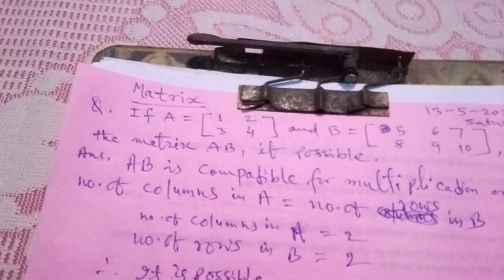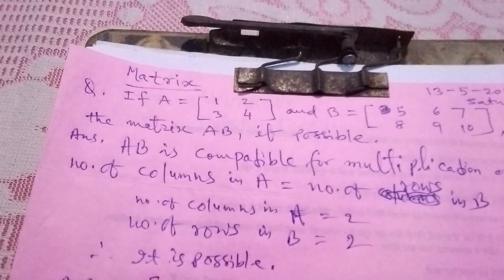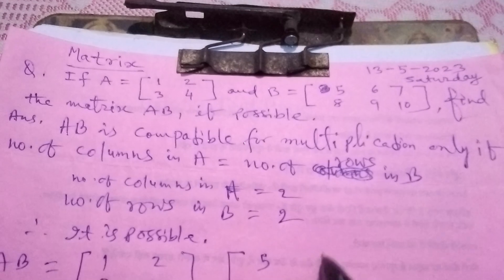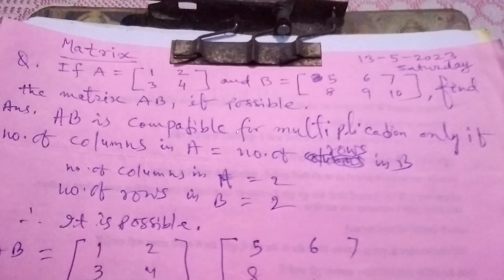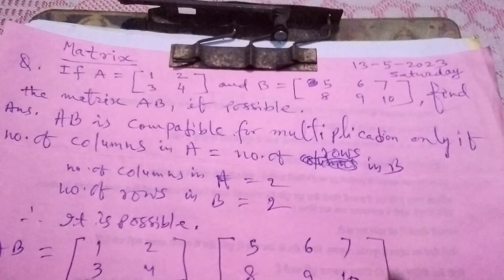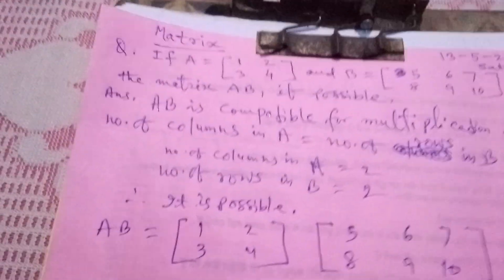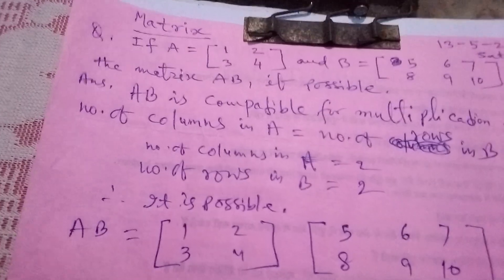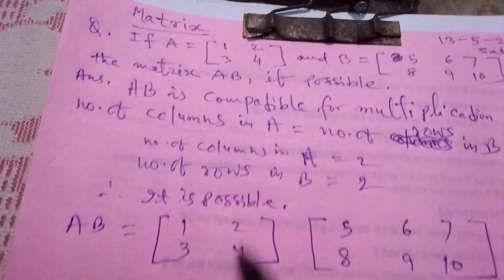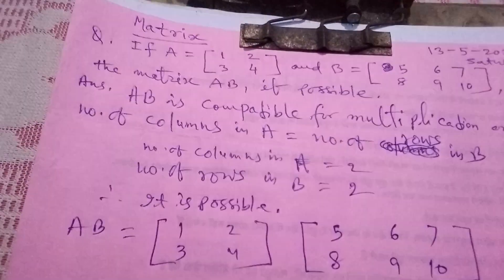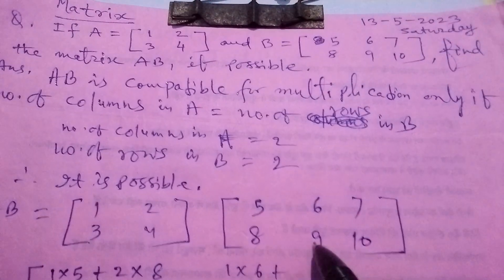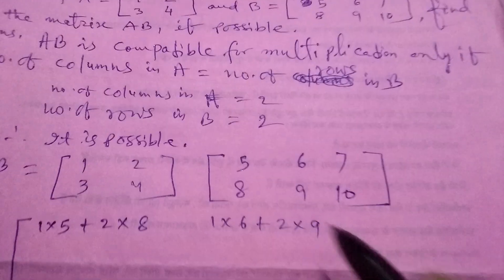1, 2, 3, 4 and B is 5, 6, 7, 8, 9, 10. So this equals to 1 into 5 plus 2 into 8, again 1 into 6 plus 2 into 9, again 1 into 7 plus 2 into 10.